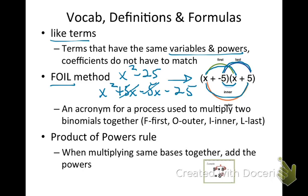Finally, we're going to use the product of powers rule. When multiplying same bases together, you add the powers. So the example is 8 to the 4th power times 8 to the 3rd power. Since the bases are the same, we add the exponents: 8 to the 4 plus 3, which is 8 to the 7th power.